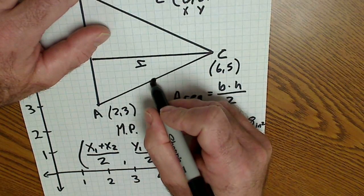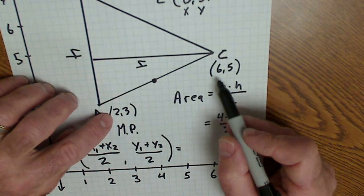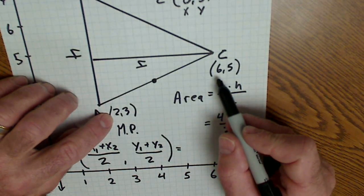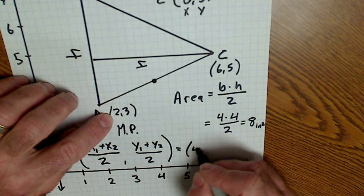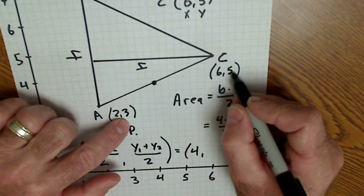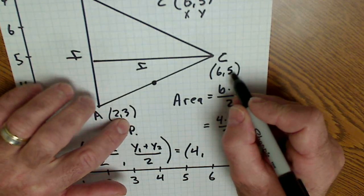So the midpoint of segment AC is 2 plus 6, 8, divided by 2, 4. 3 plus 5, 8, divided by 2, 4.